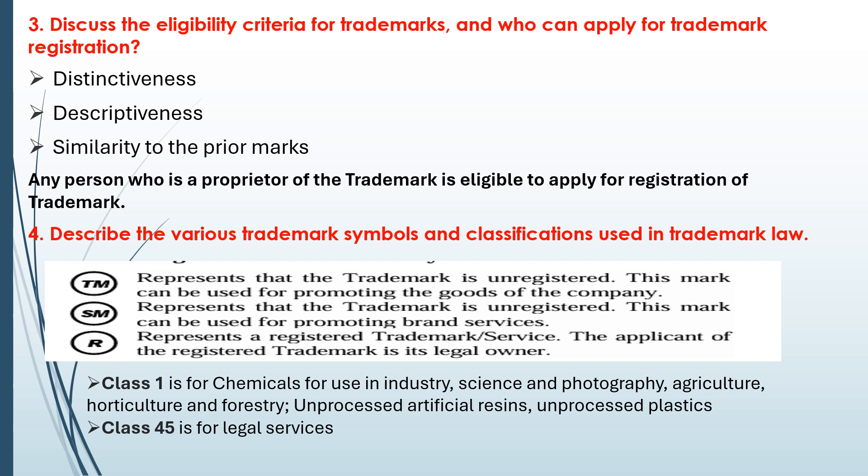The fourth question: describe the various trademark symbols and classifications used in trademark law. The three symbols are TM, SM, and ®. TM and SM indicate that the trademark is not yet registered. TM is used for goods — goods, services, import/export — while SM is used for brand services like Apple or Samsung. The ® symbol indicates that the trademark is officially registered.